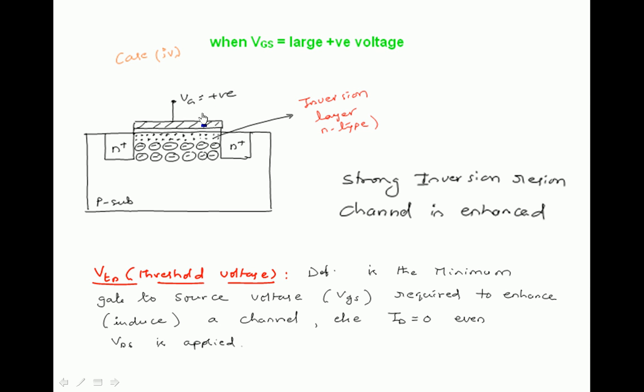The minimum amount of gate-to-source voltage required to enhance and create a channel is called the threshold voltage, denoted VT with suffix N for NMOS and suffix P for PMOS. If this minimum positive voltage is not applied at the gate, drain current will be zero even if VDS is applied.